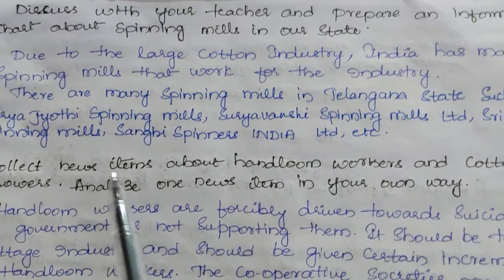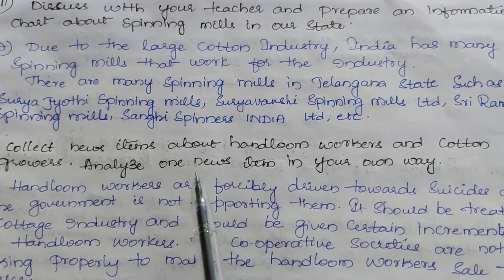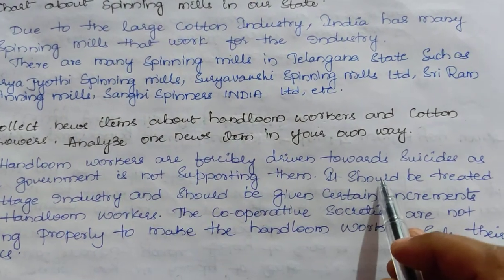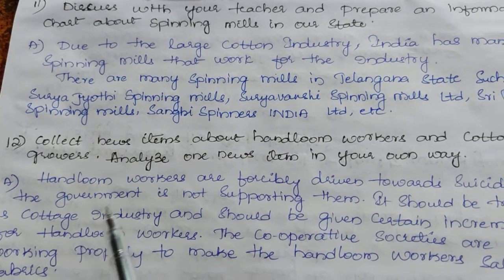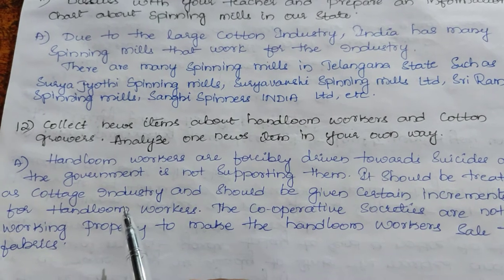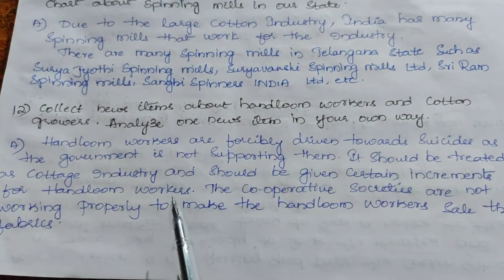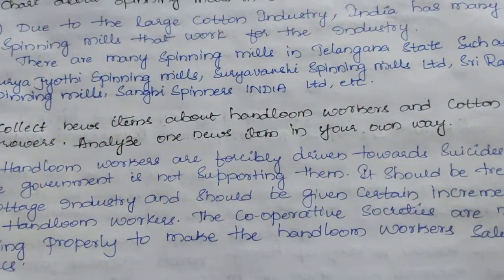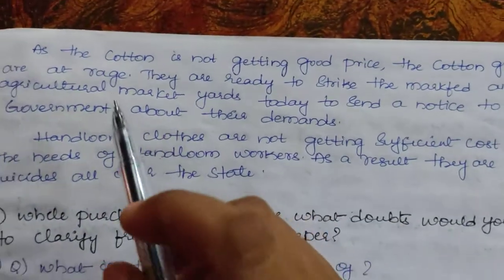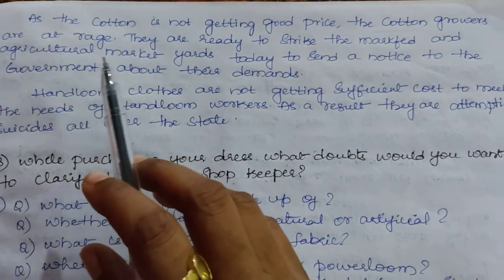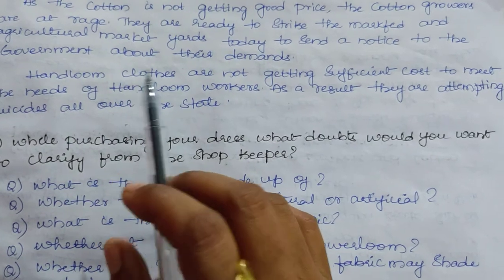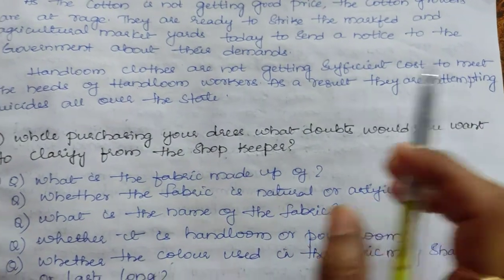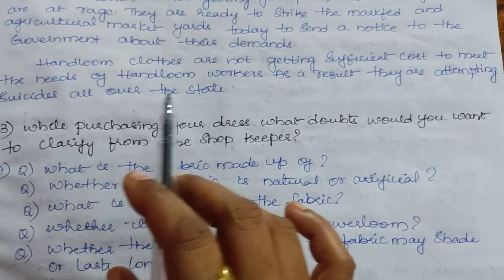Question 12: collect news items about handloom workers and cotton growers and analyze one news item. Handloom workers are being driven towards suicides as the government is not supporting them. It should be treated as a cottage industry and given certain increments. Cooperative societies are not working properly to help handloom workers sell their fabrics. Cotton growers are at rage as cotton is not getting a good price; they are ready to strike agricultural market yards to send a notice to the government about their demands.